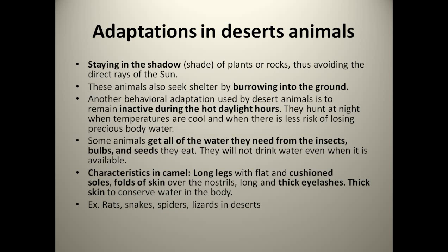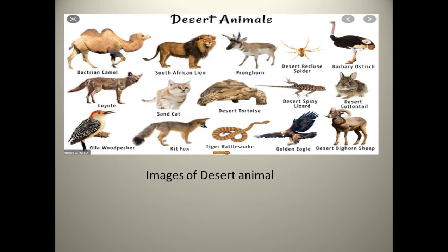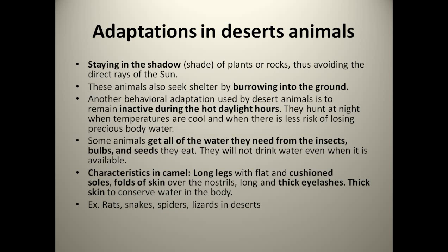The most specific animal found in the desert area is the camel. The characters camel have to survive include: long legs with flat and cushioned soles, folds of skin over the nostrils, long and thick eyelashes, and thick skin to conserve water. From childhood we know the camel carries a hump on its body, in which the camel stores water and food for coming days.